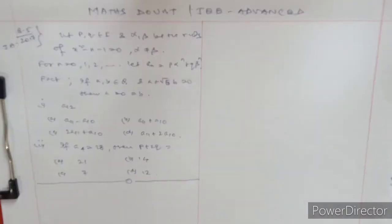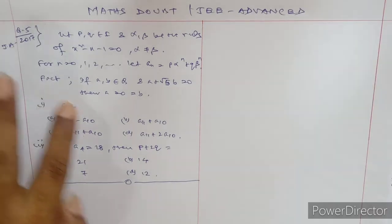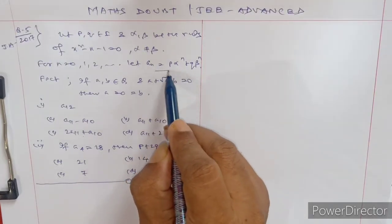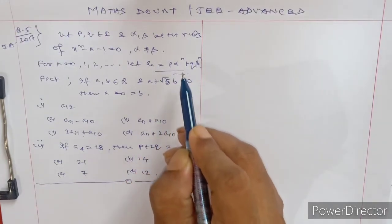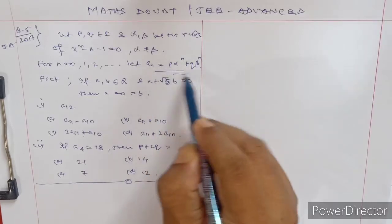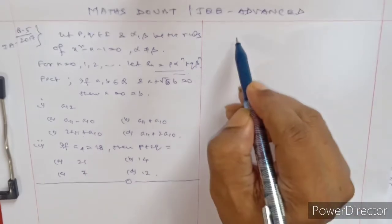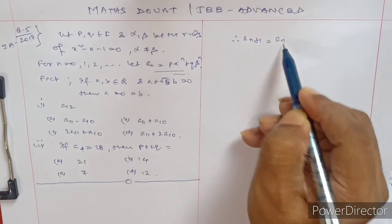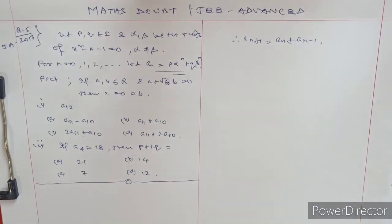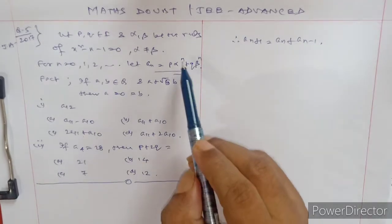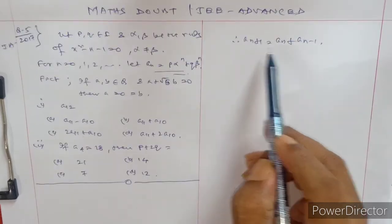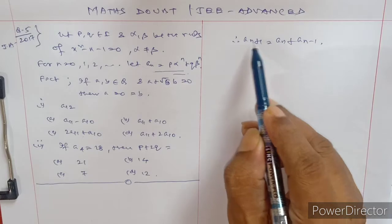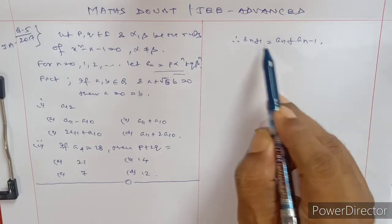What will be the value of a₁₂ as well as a₄? Whenever you get such type of relations, note the recurrence: aₙ₊₁ = aₙ + aₙ₋₁. Just simply put the values and you will get the answer — n+1 equals n plus n minus one.